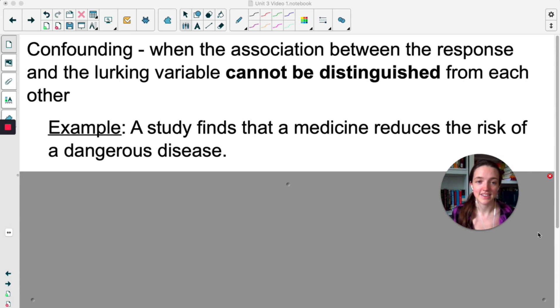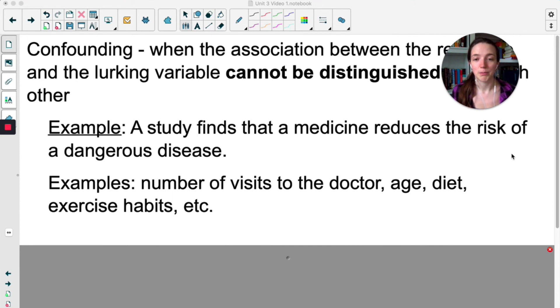For example, let's say a study finds that a medication reduces the risk of a dangerous disease. So our explanatory variable is the medication, how much you're taking, or whether or not you're taking it. And then the response is the amount of risk that that person has for the certain disease. Some examples of confounding might be the number of visits to the doctor. So maybe people who visit the doctor more have a reduced risk of getting that disease. It doesn't have to do with the medication. Maybe it's how often they visit the doctor. Maybe it has to do with age or diet or exercise habits. There's tons of things that a person could do in their everyday life that would make them less or more at risk of a dangerous disease.